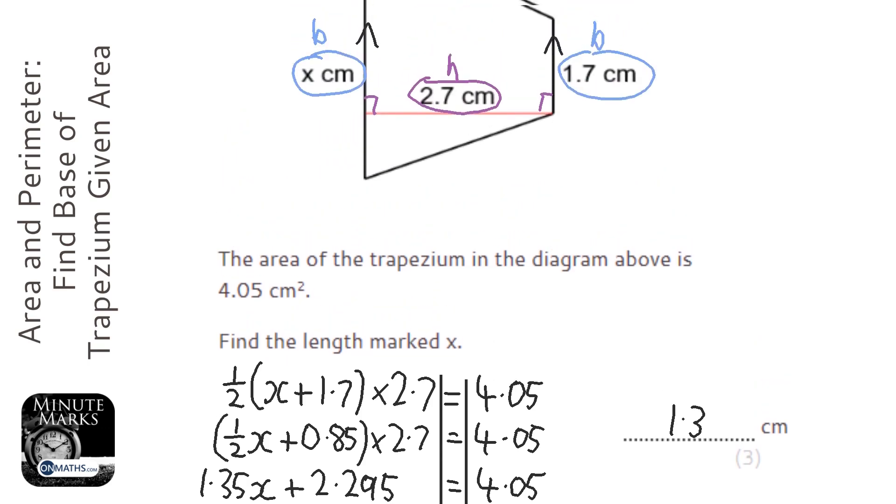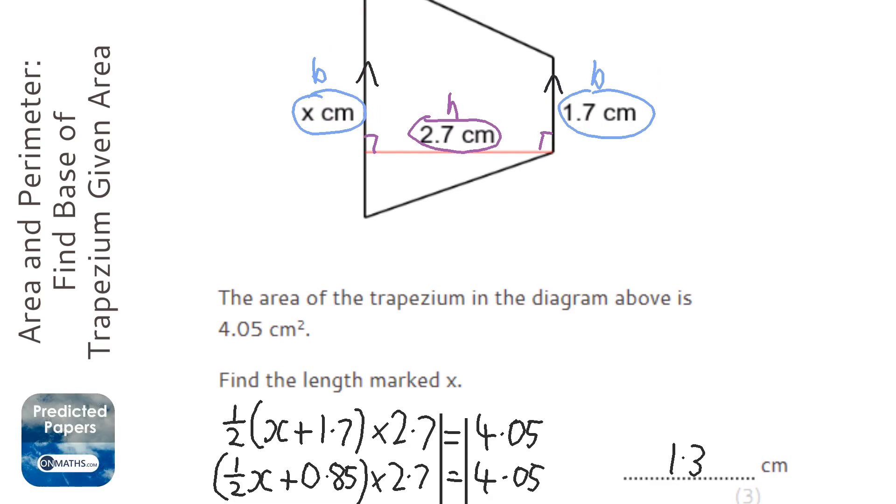As long as you get the answer 1.3. Now I can check that: 0.5 times (1.3 plus 1.7) times 2.7 gives me 4.05, so I know it's correct.